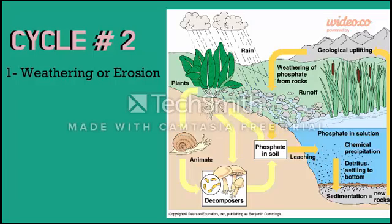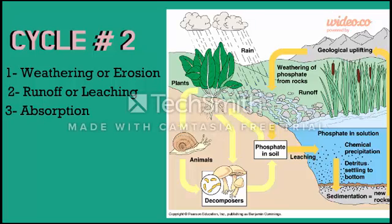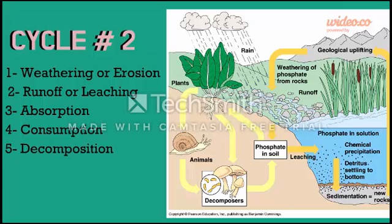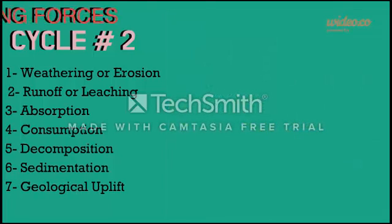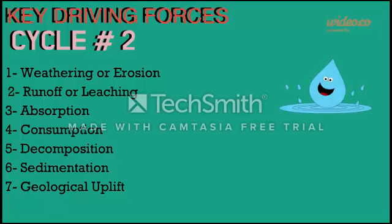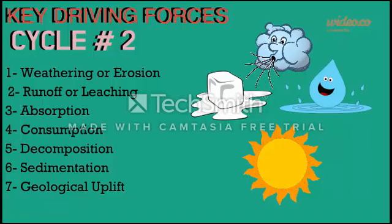The stages of the second cycle first go through weathering or erosion to release phosphate ions that are carried away by runoff or possible leaching into the oceans. Absorption will occur within the water plants, which will be consumed by water animals and then decomposed later on. The phosphate ions will go through sedimentation where a majority will stay at the bottom of the ocean and get lost from the world, but have a possible recovery from a geological uplift. The key driving forces of the second cycle are water, wind, or ice to cause weathering or erosion. Another key driving force is the sun, because if the sun's rays reach the bottom of the ocean where sediments are, then it is possible for geological uplift to occur and the whole process will cycle.